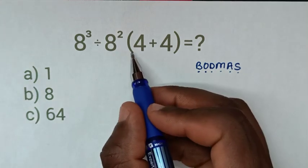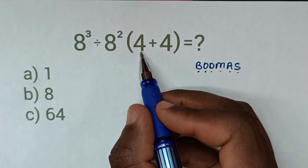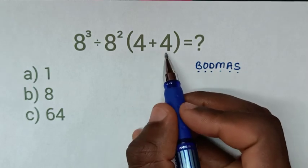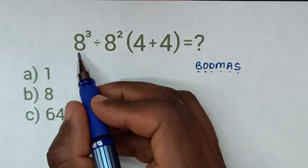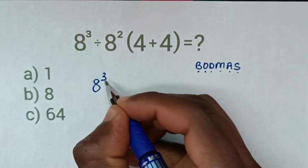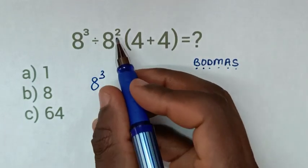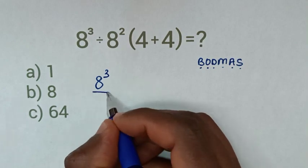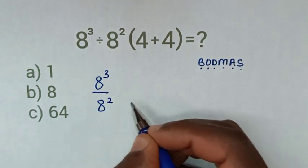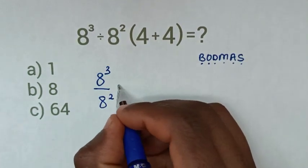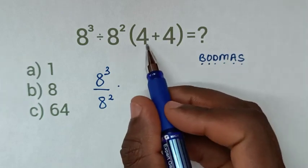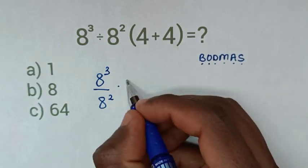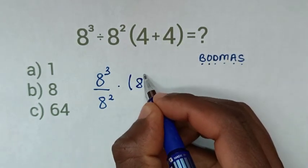So from here we have bracket, then from 4 plus 4 is 8. So it will be 8 power 3, then divide by 8 power 2 is same as over 8 power 2, then times, here in the bracket, 4 plus 4 is 8. So it will be bracket 8 bracket.